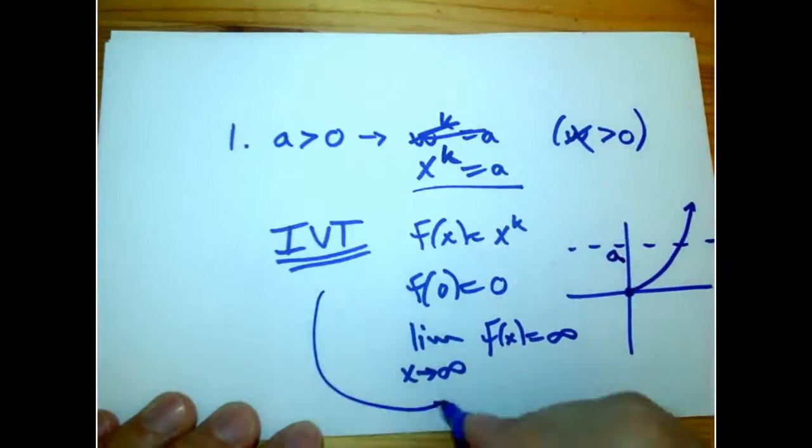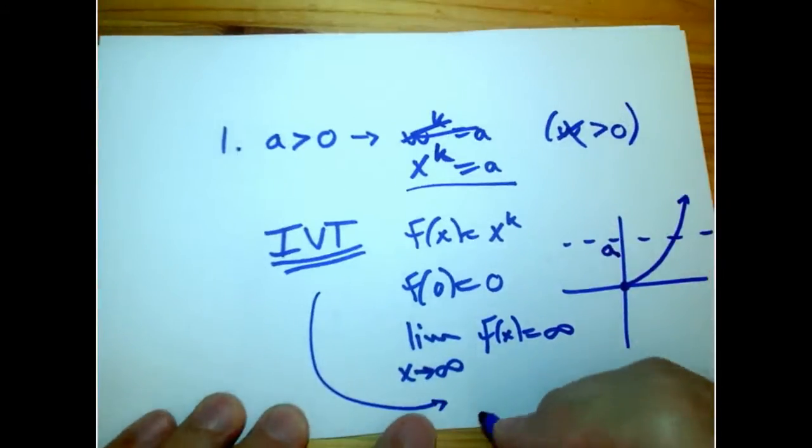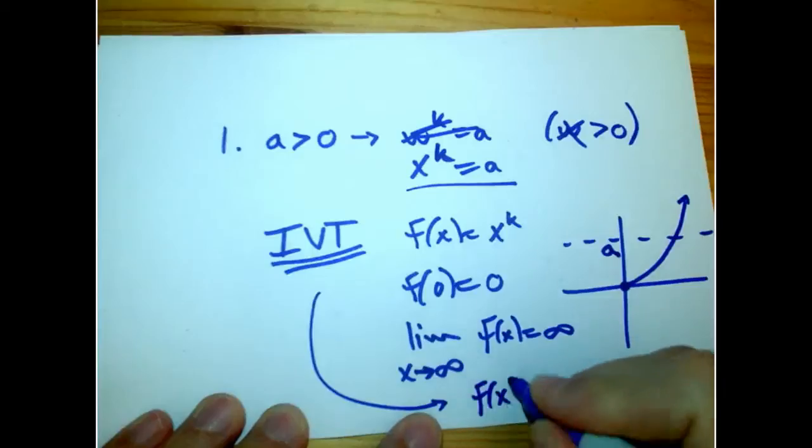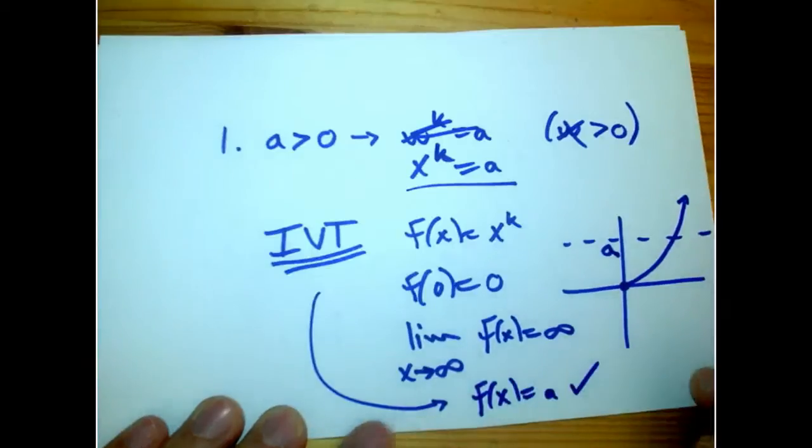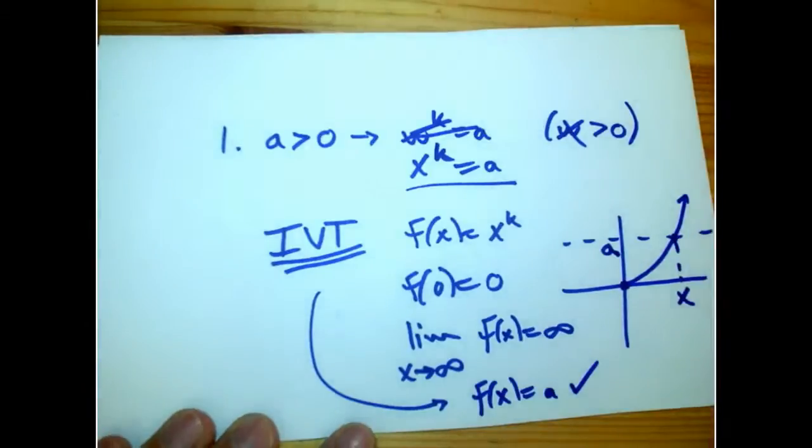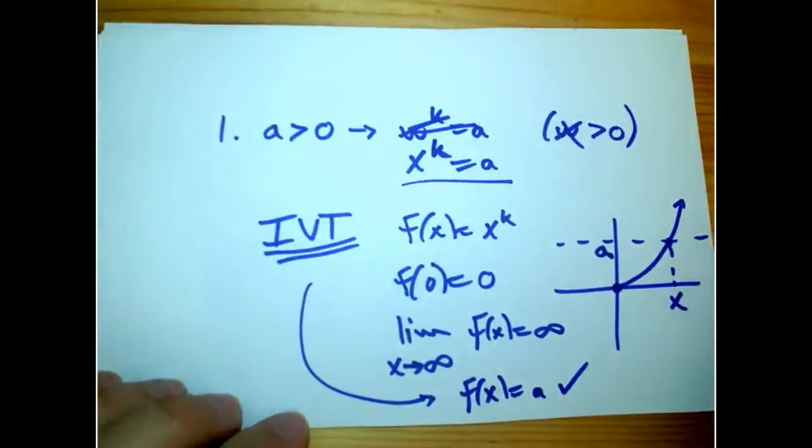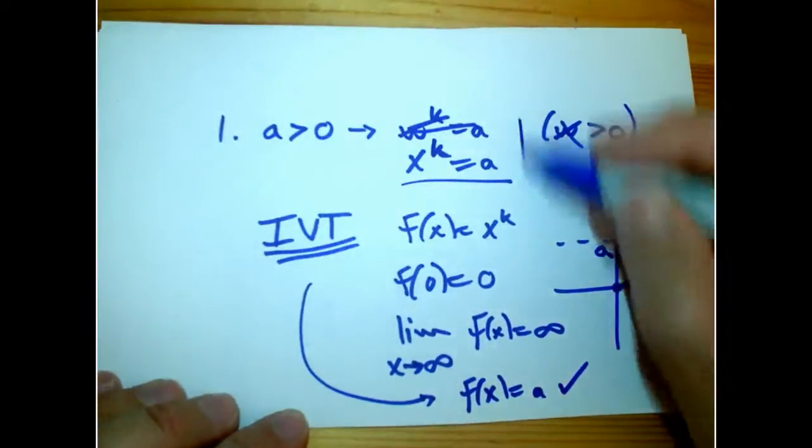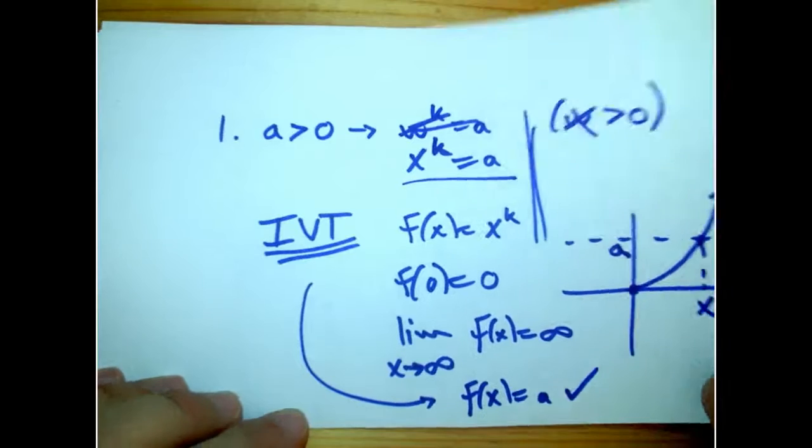So by the intermediate value theorem, there exists some x such that f(x) equals a. And there's the x. That's just a use of the IVT to get the fact that there's such a thing as a real k-th root. I don't really need to know how to find it or construct it in any particular way. It's just a topological fact. So that's one of the places the topology comes in.